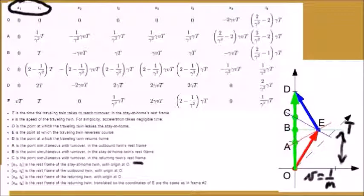A, B, and C are the events which are simultaneous with the traveling twin's arrival, stop, and departure from the turnaround event. They will all be simultaneous with the event E, the turnaround event, at some point during the turnaround.